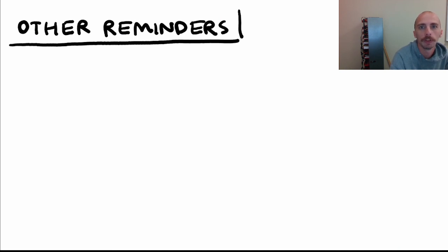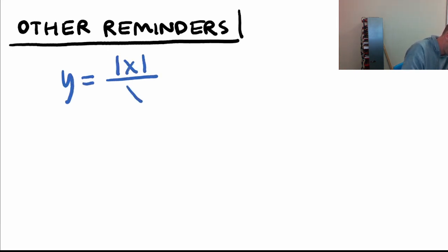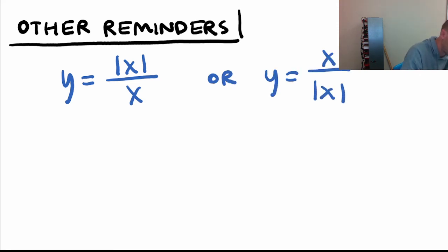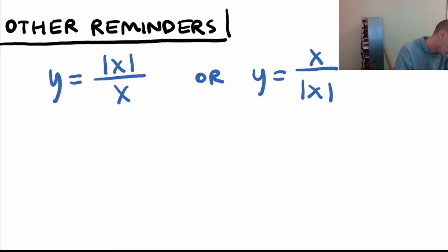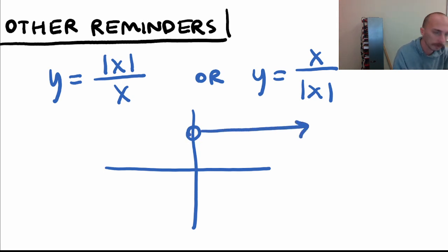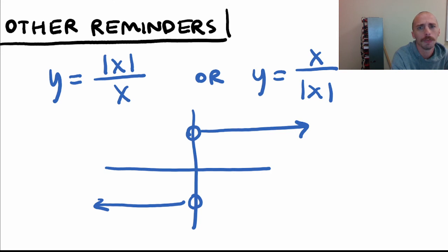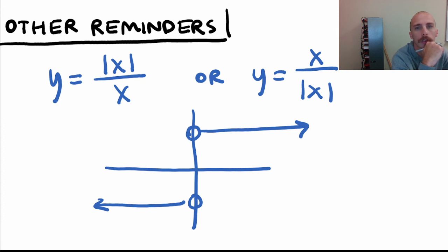One more reminder before the mean value theorem: the function y equals |x|/x, or equivalently x/|x|, is 1 when x is positive, -1 when x is negative, and undefined at x equals 0. Transforms like (x-6)/|x-6| shift this to the right by 6. There are lots of one-sided limit multiple choice questions on AP Calculus about this type of function, so don't forget about it.